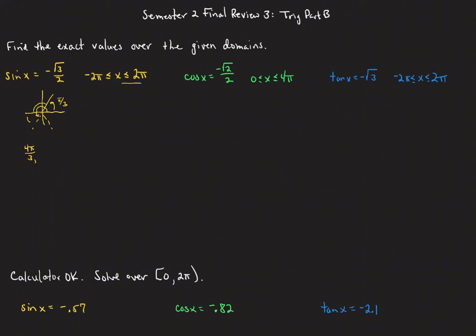To get to the quadrant 4 angle, we get 5 pi over 3. Going in the negative direction, we can get to the quadrant 4 angle as negative pi over 3, and the quadrant 3 angle as negative 2 pi over 3. So we're going two trips around the unit circle — from 0 to negative 2 pi in the negative direction and from 0 to 2 pi in the positive direction — generating two angles each trip for a total of 4 angles.